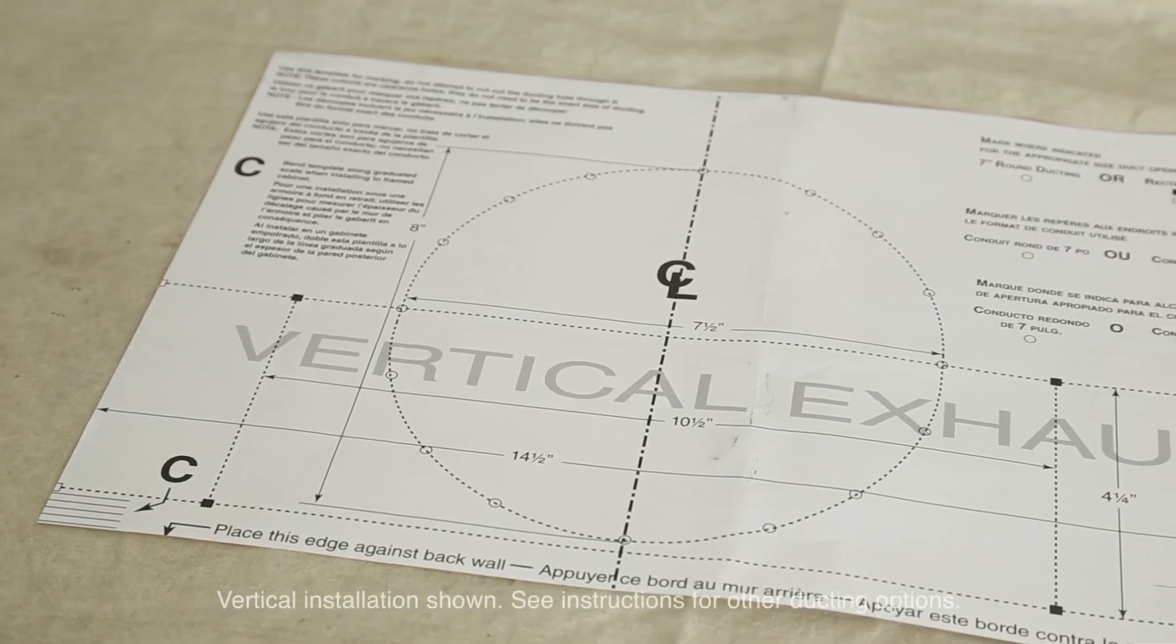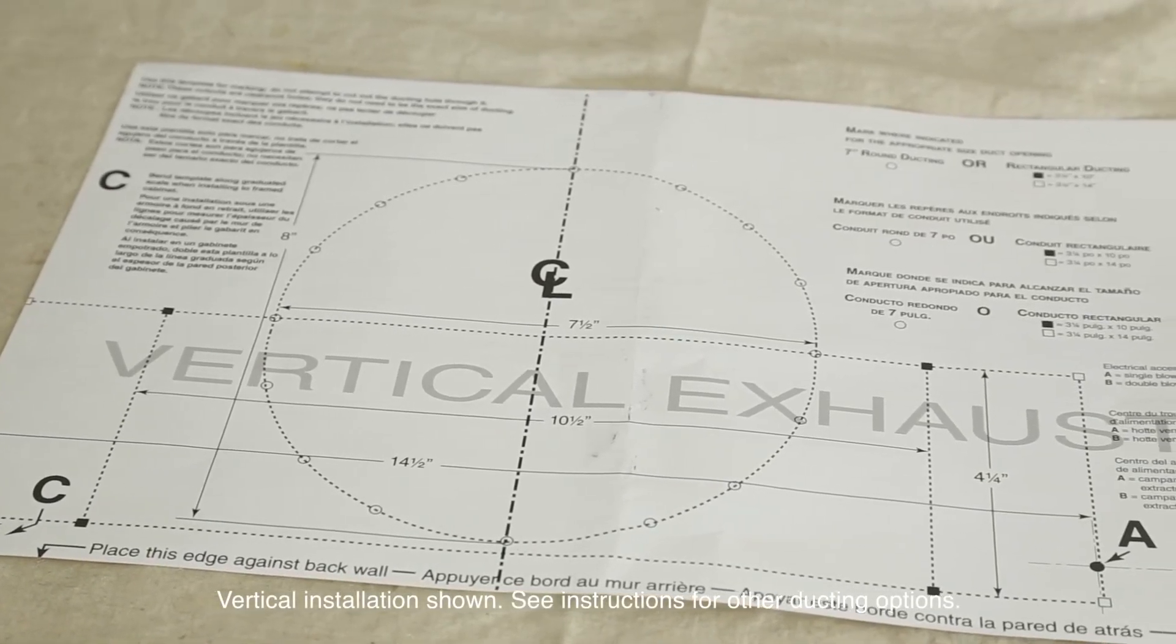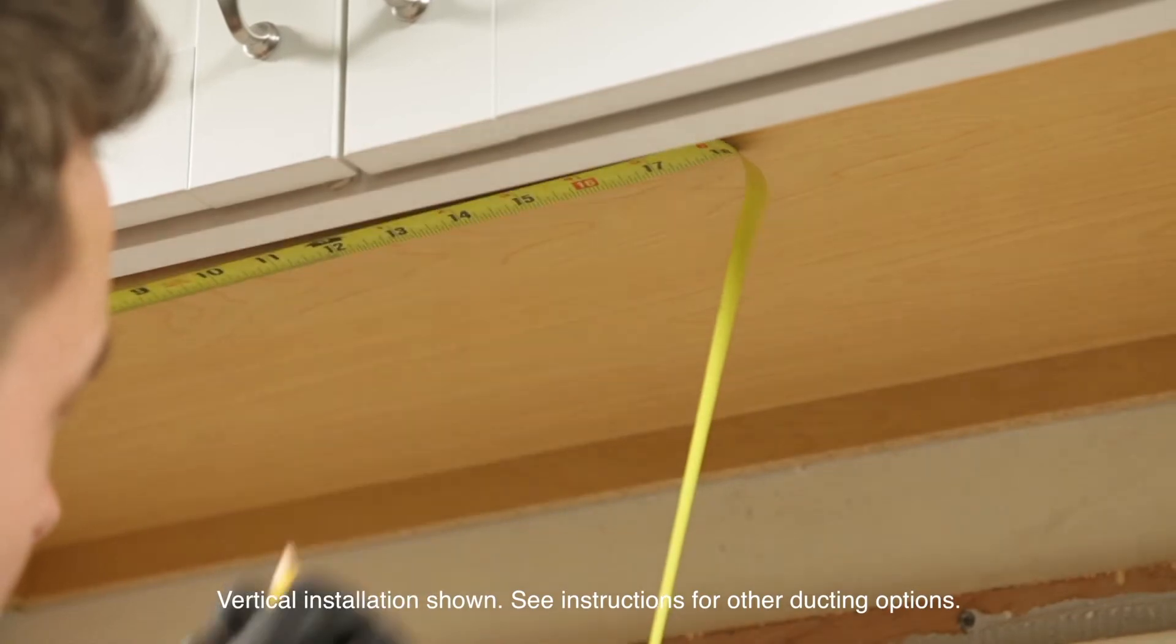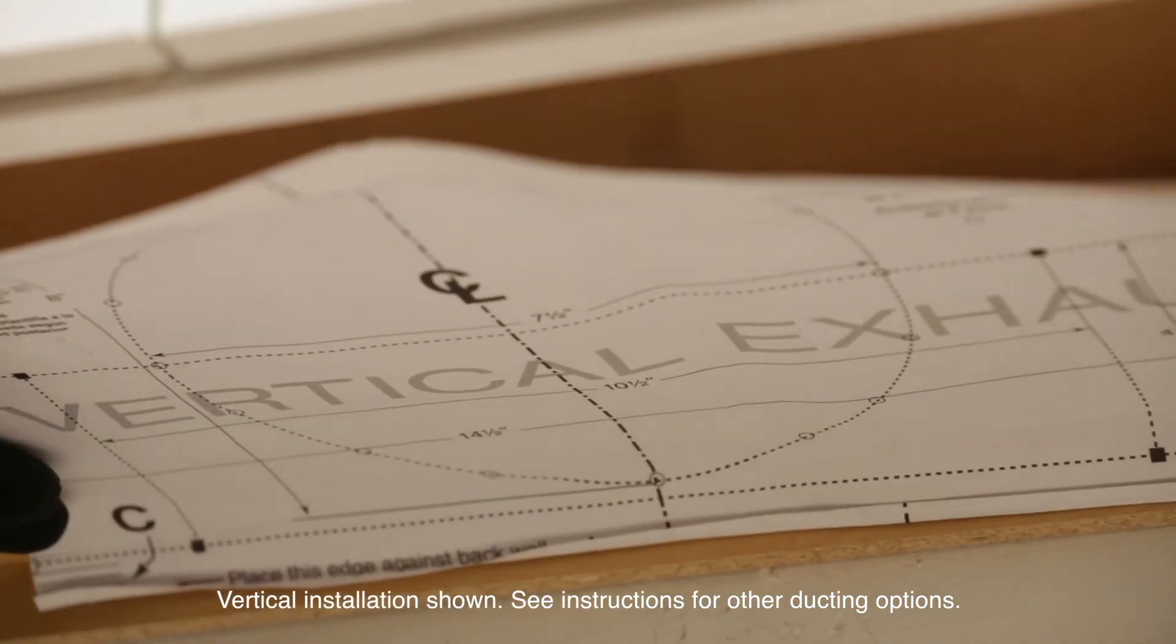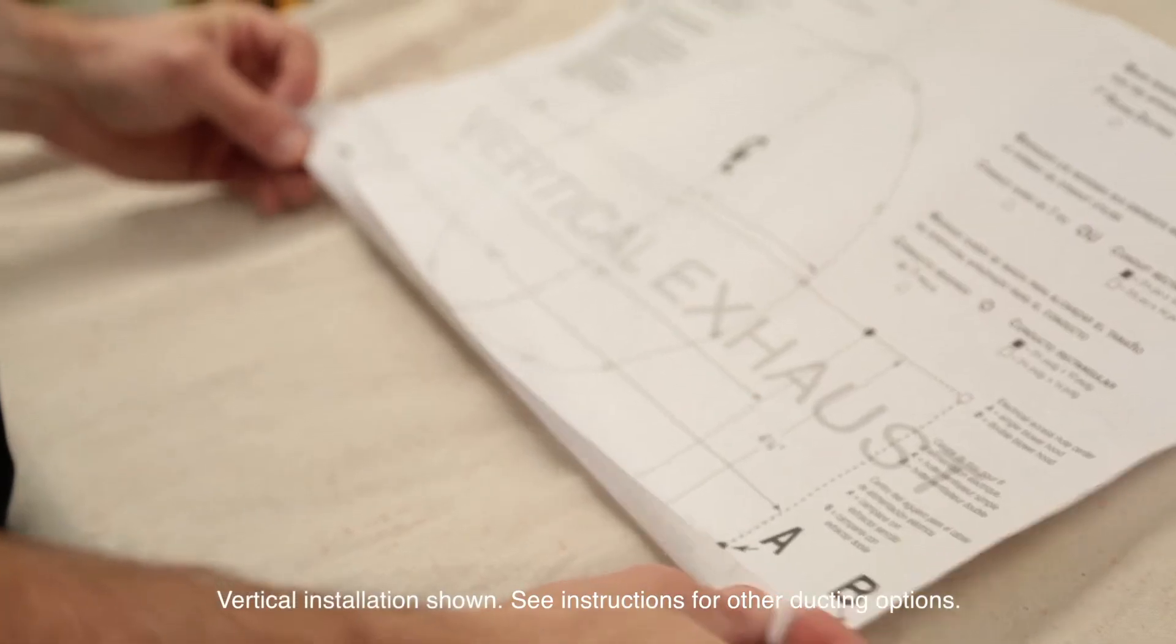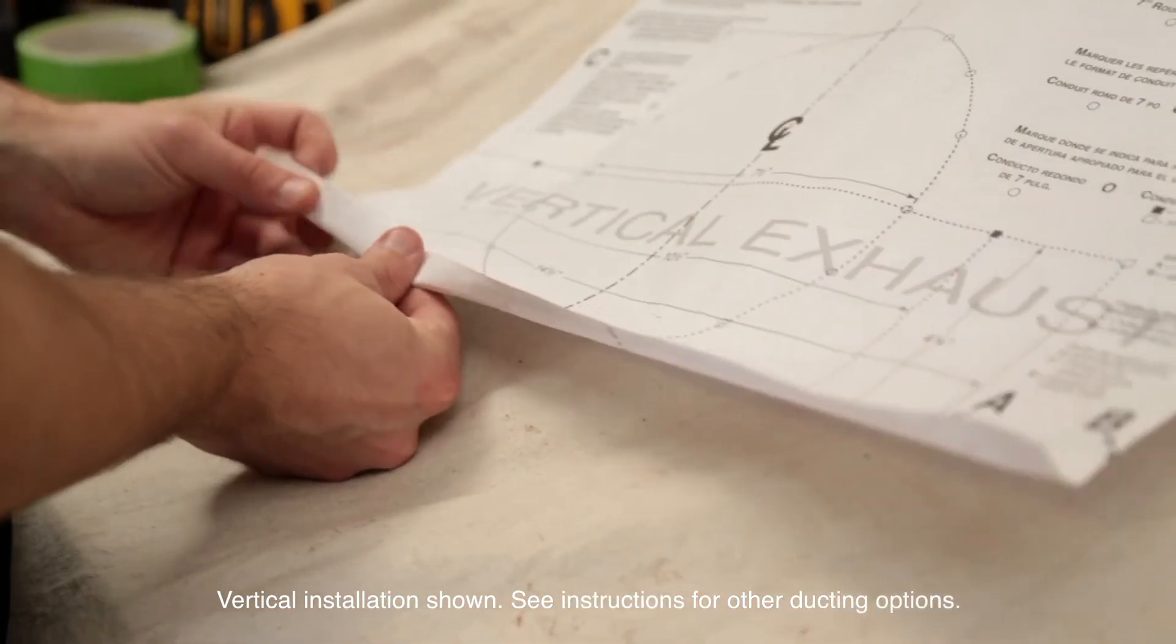Use the included template to mark the cabinet for the hood. Measure and mark the hood's center line on the bottom of the cabinet. Then, line up the template with the line that you drew on the cabinet. If you have a framed cabinet, fold over the rear edge of the template so the depth matches the cabinet frame at the wall.